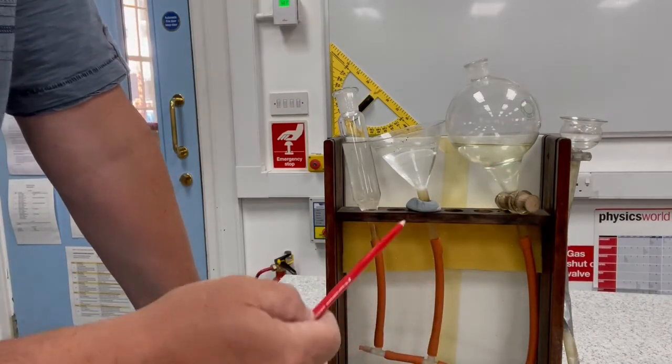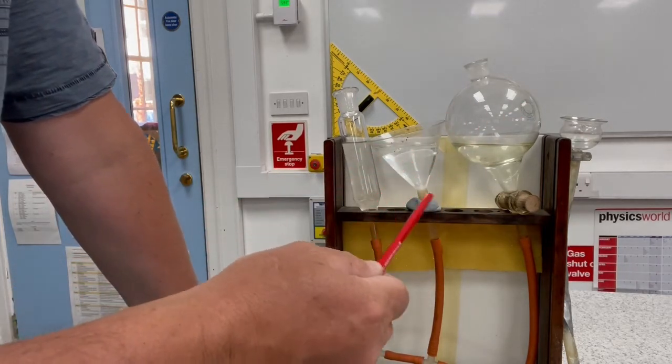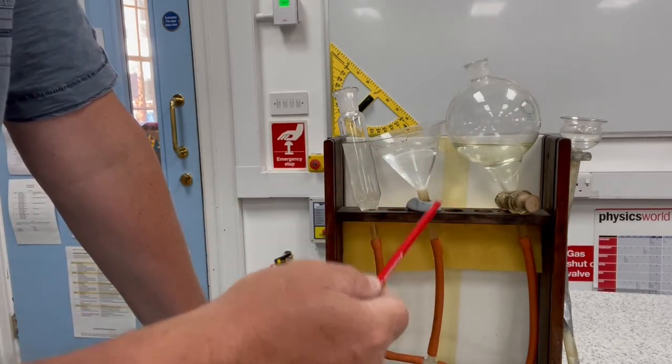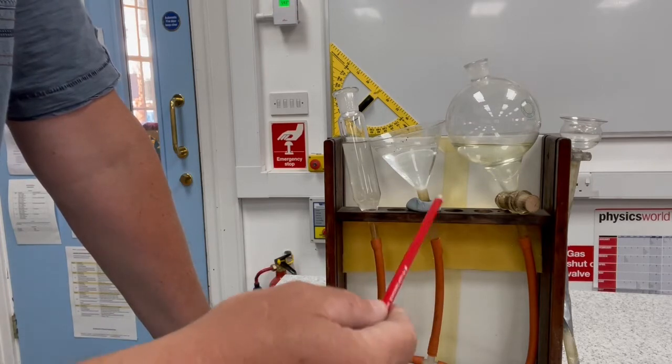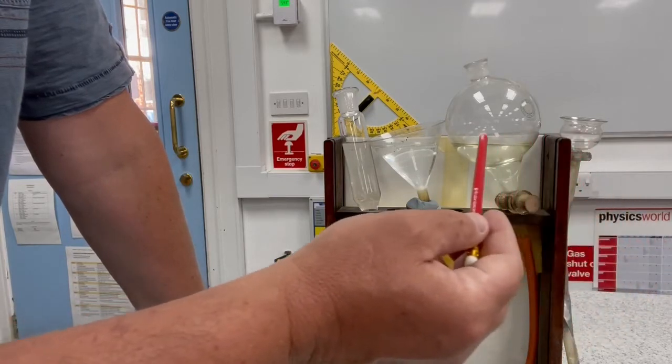The pressure is given by the density of the fluid, in this case water, times gravity, which we know is 10, times the depth of water. So all of these three vases have water level at the same level,